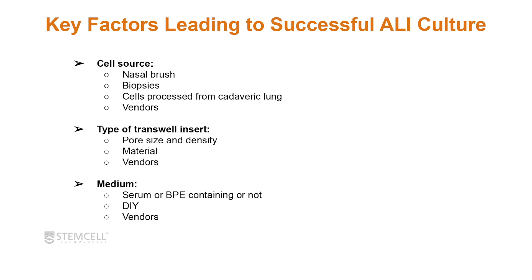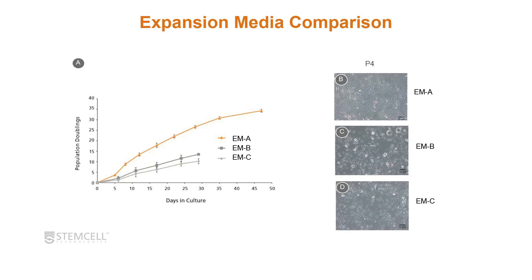You also want to keep in mind the type of transwell insert — the pore size and density, the material, and the vendor — as well as the media, whether it contains serum or bovine pituitary extract, whether you're making it yourself or using commercial formulations. Today we'll focus on comparing different types of media and what to look for in your cultures to assess their usefulness. Here's an example of an expansion media comparison across media A, B, and C. Depending on which media you use, you may see different growth patterns in population doubling over time.